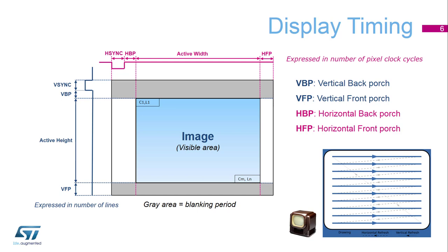The H-sync, or horizontal sync, indicates the start of a new line. The horizontal front porch is the interval period between the end of picture information and the start of a horizontal pulse, or H-sync. The horizontal back porch is the duration between the end of a horizontal pulse and the start of the next line of the visible area. The vertical back porch is the delay between the V-sync end and the start of a new frame. And the vertical front porch is the delay between the end of a visible area frame and the next V-sync start. All these signals are inherited from the analog display domain. During the gray area, no pixel data is actually updated on the panel — it is called the blanking period.